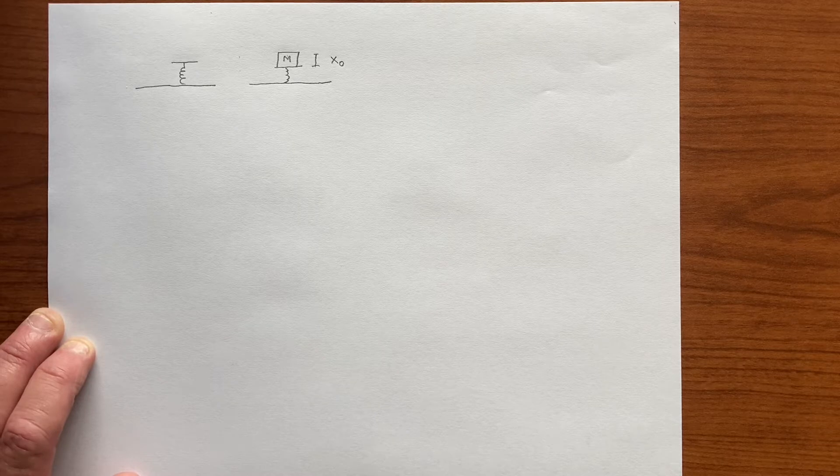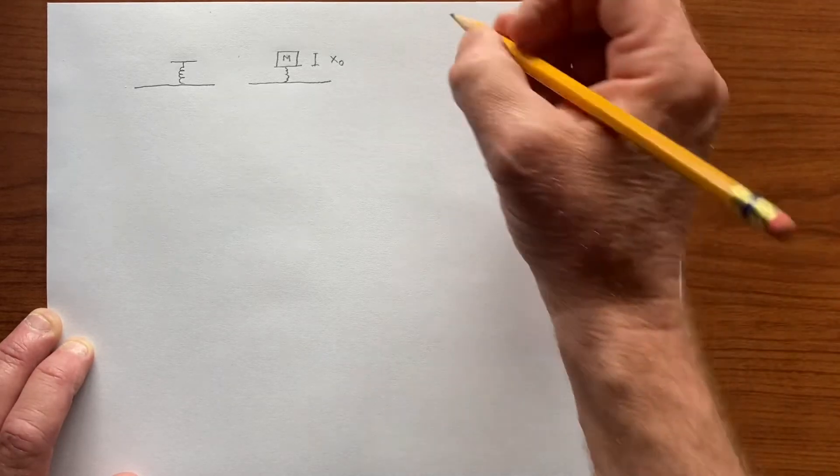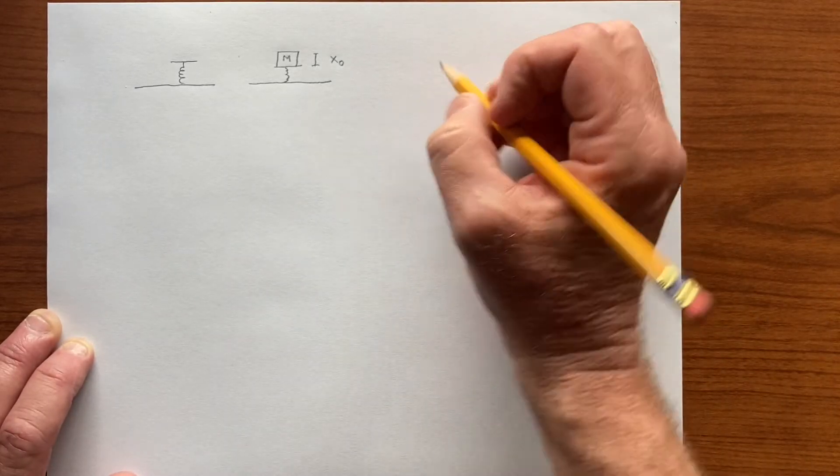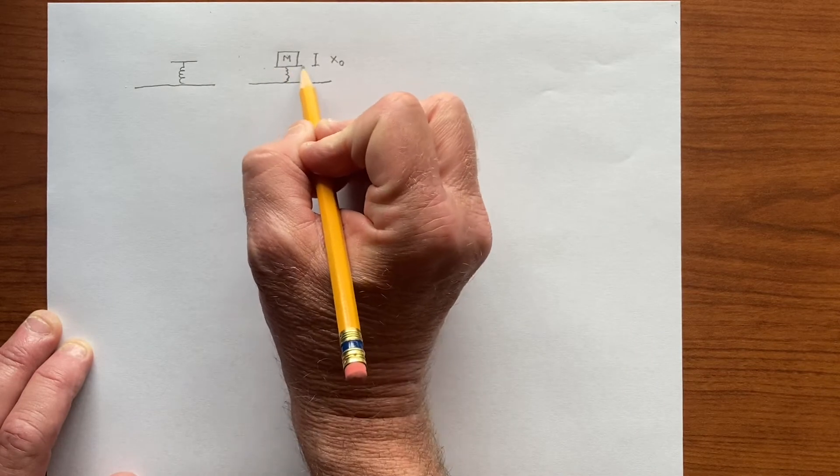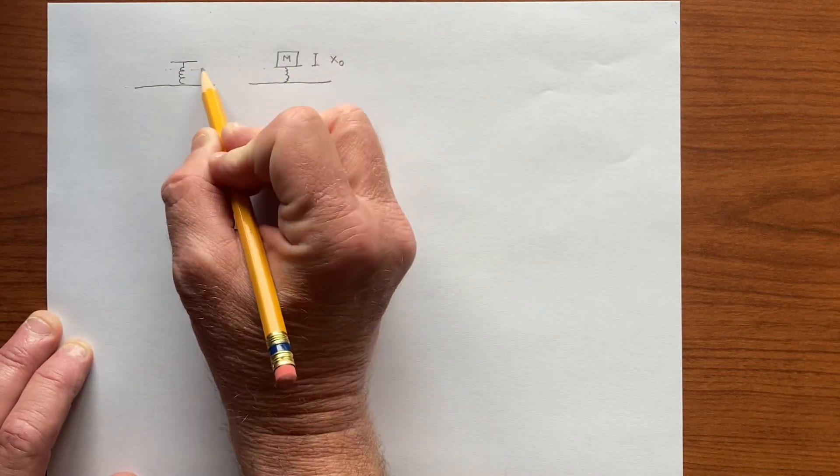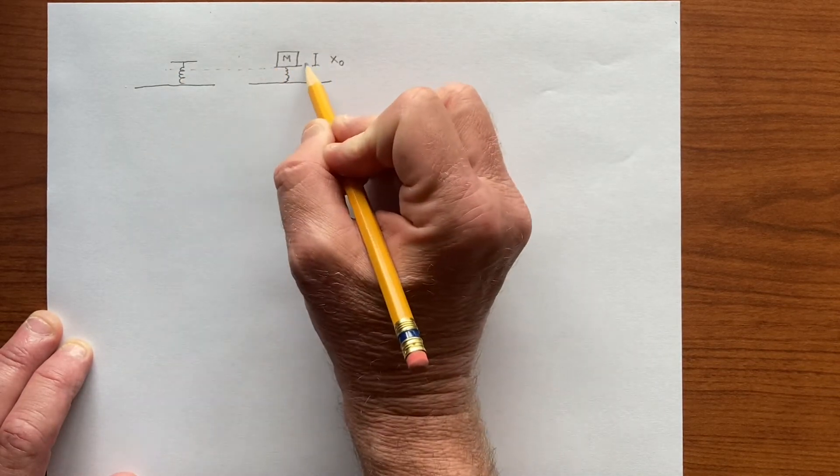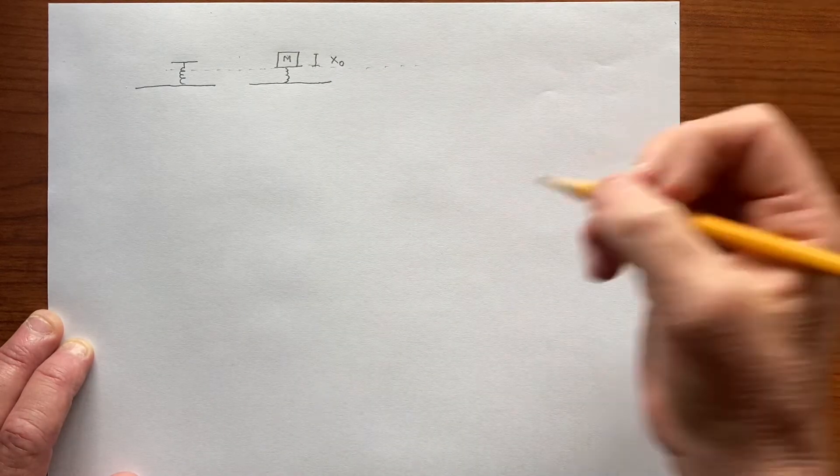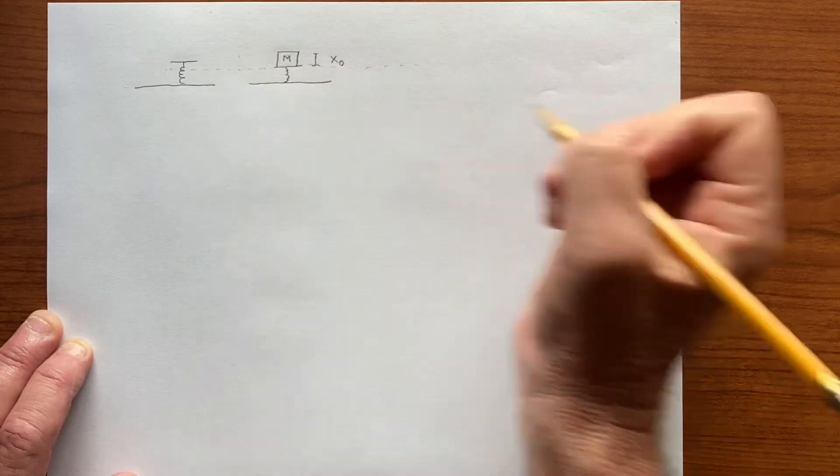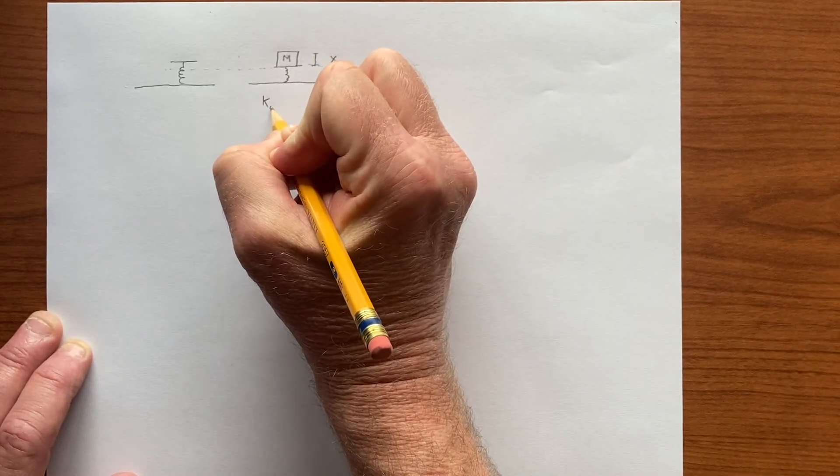This is just conservation of energy. Initially, if we call this ground level, and say the spring constant is k0,